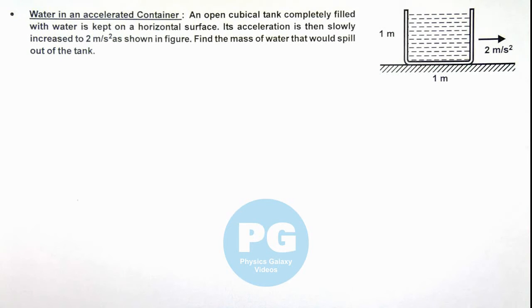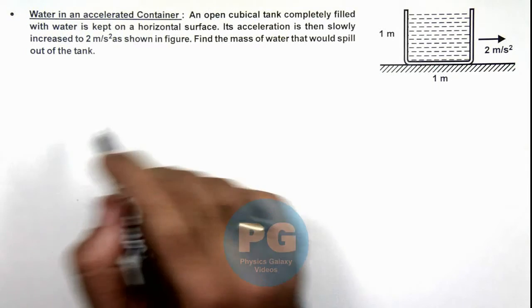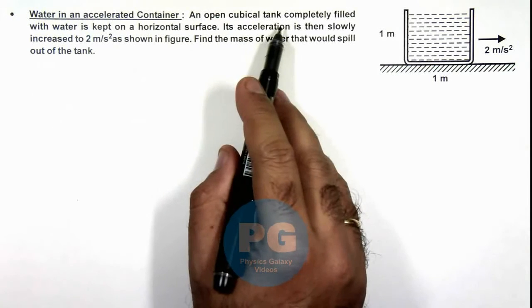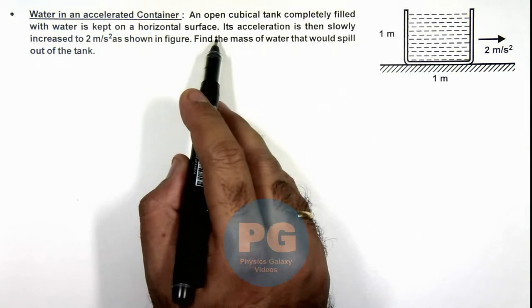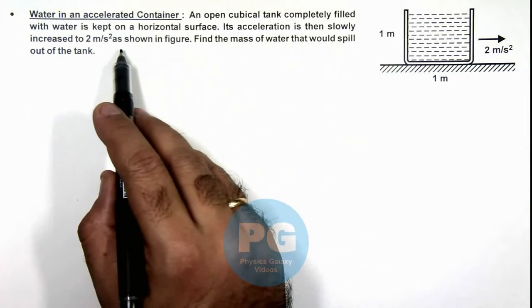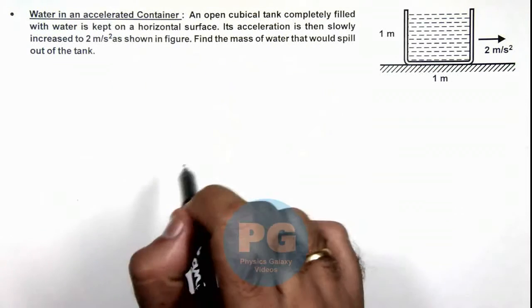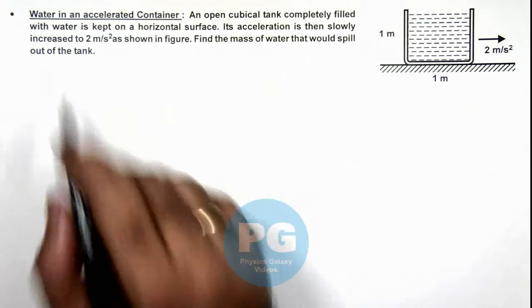In this illustration, we'll analyze the water in an accelerated container. We are given that an open cubical tank completely filled with water is kept on a horizontal surface, and its acceleration is slowly increased to 2 meters per second squared as shown in the figure. We are required to find the mass of water that would spill out of the tank.